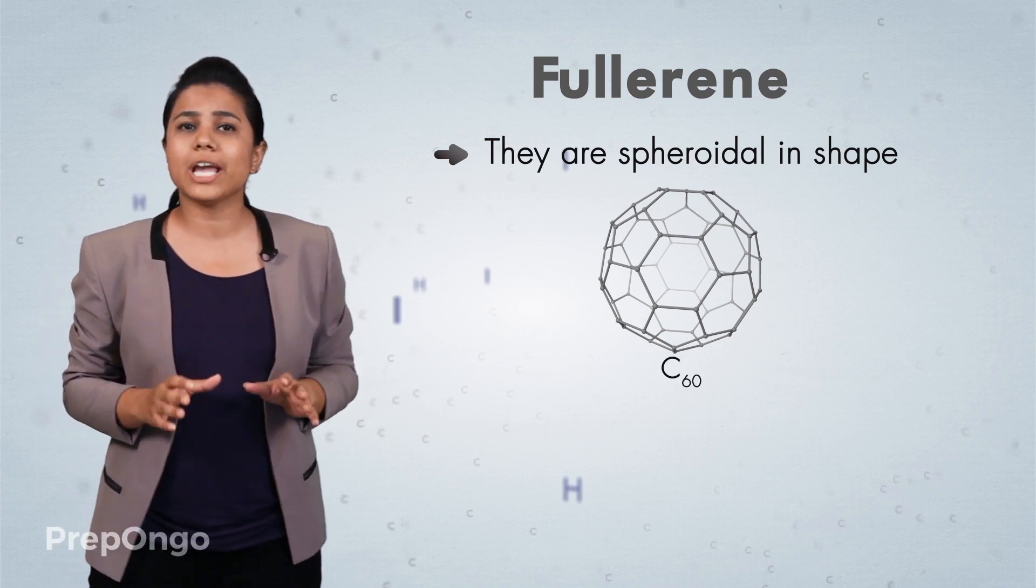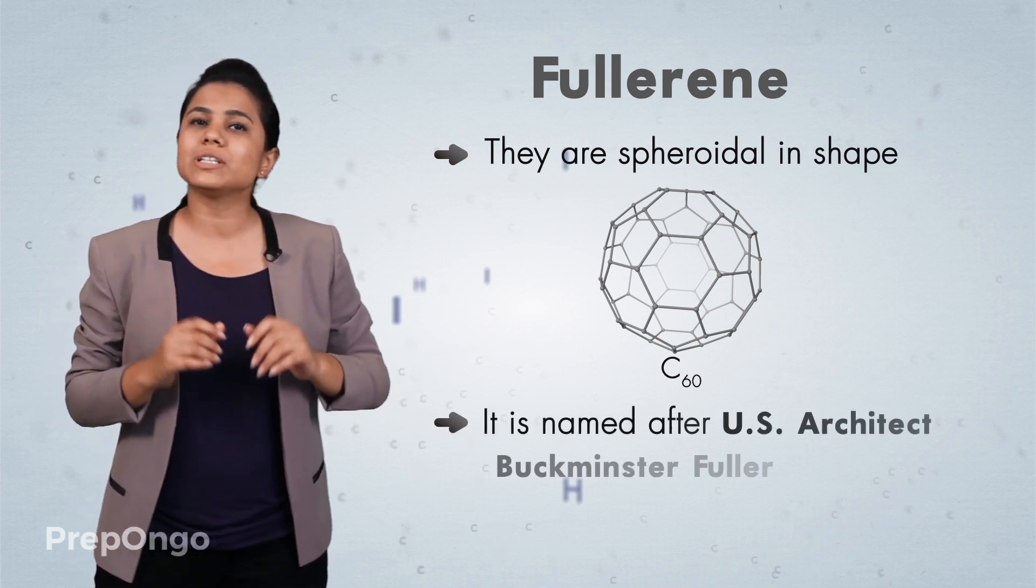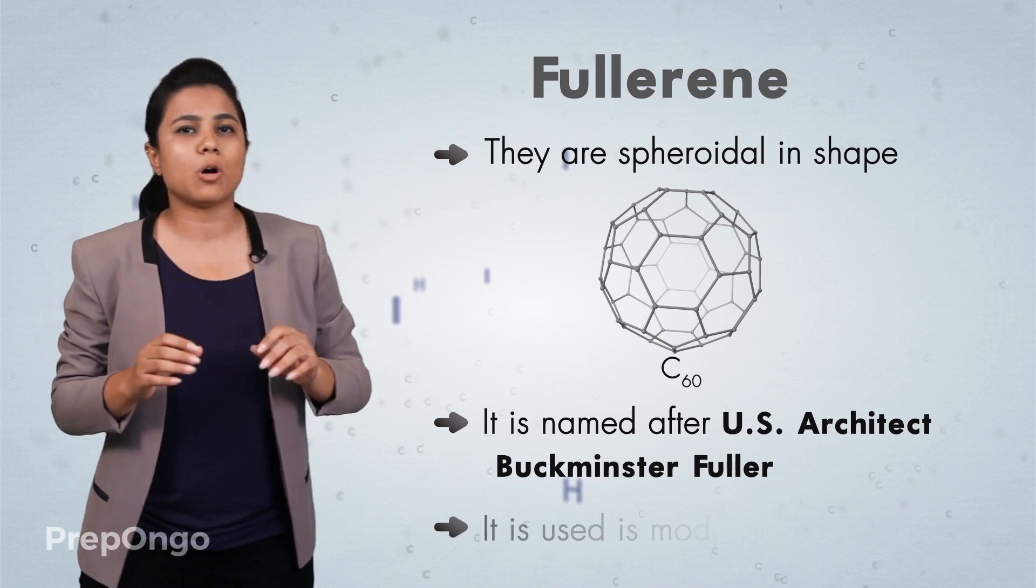Since it looked like a geodesic dome designed by US architect Buckminster Fuller it was named as fullerene. It is mainly used in modern science.